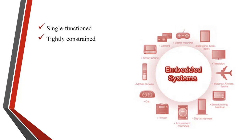An embedded system is tightly constrained. All computer systems have constraints on design matrices, but those on an embedded system are especially tight. The design matrix is a measure of implementation features such as cost, size, power, and performance. It must be of a size to fit into a single chip, perform fast enough to process data in real time, while consuming minimum power to have an extended battery life.